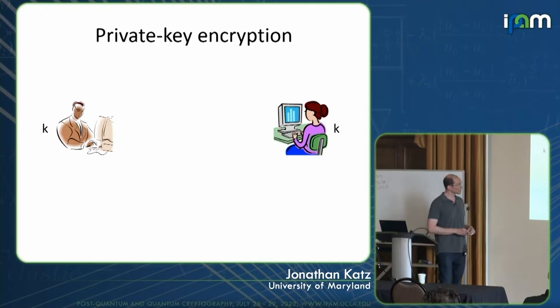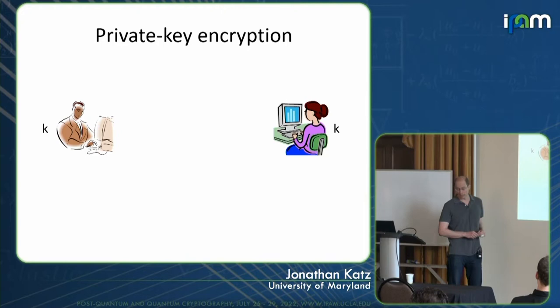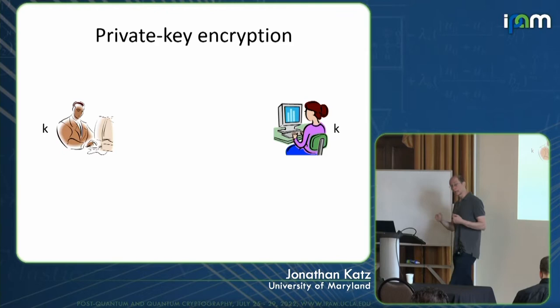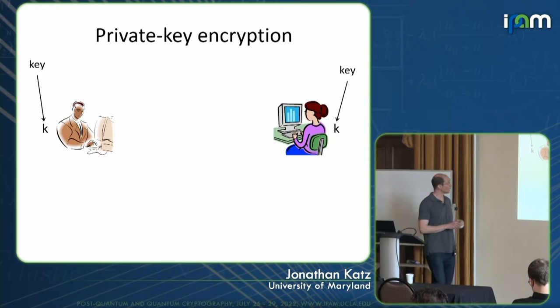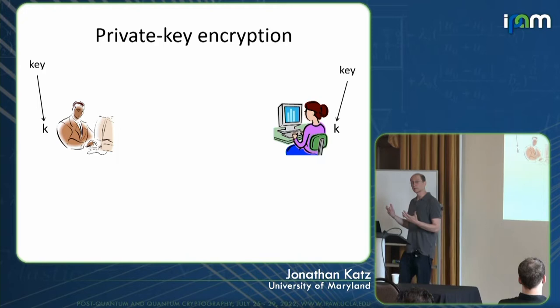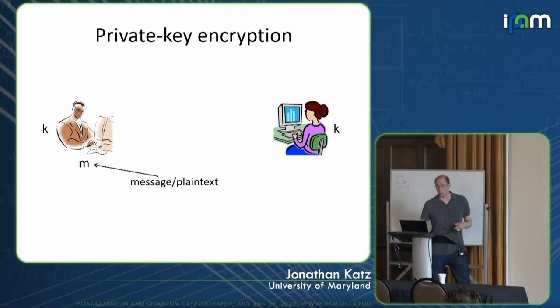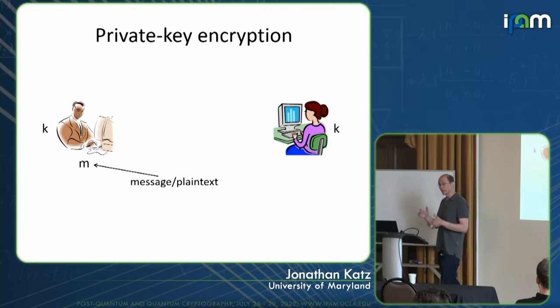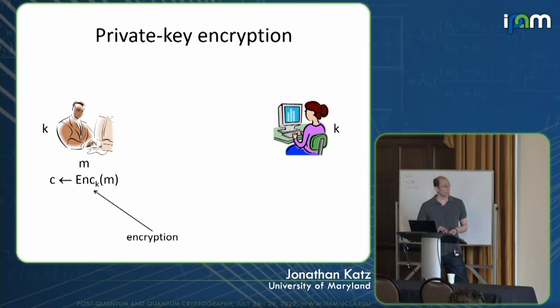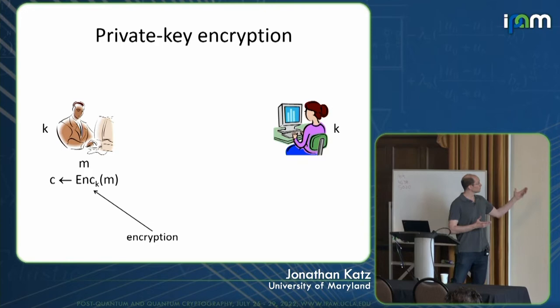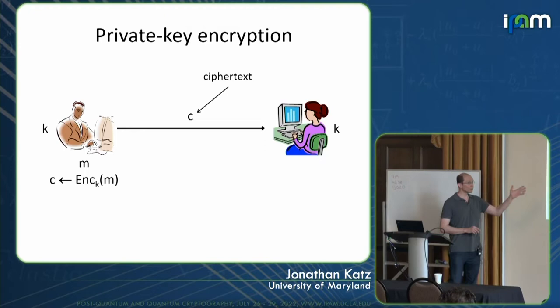In the context of private key encryption, we have two honest parties — Alice and Bob — who want to communicate over an insecure channel. They're going to agree in advance and share a key K before their communication. When one party wants to communicate, they'll have a message M — also called a plaintext — that Bob wants to transmit to Alice. Bob applies an encryption algorithm using the pre-shared key K and the message M to generate a ciphertext C, which he transmits across the channel. Alice then applies a decryption algorithm to the ciphertext using the same shared key to recover the original message M.